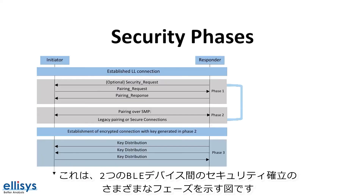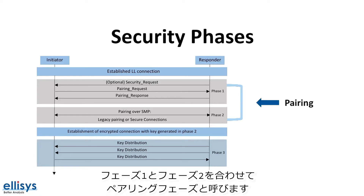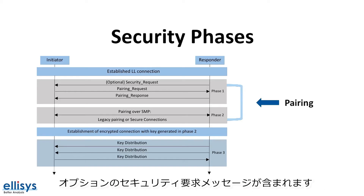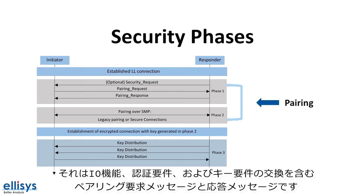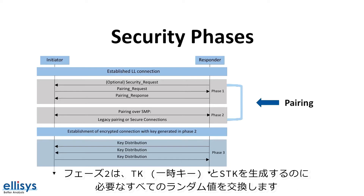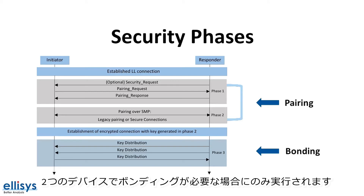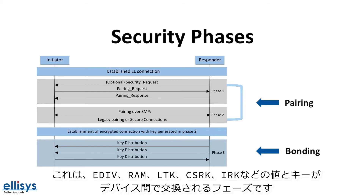Here's a diagram showing the different phases of security establishment between two BLE devices. Phases one and two together are called the pairing phase. Phase one involves the optional security request message from the slave, plus the pairing request and response messages exchanging IO capabilities, authentication requirements, and key requirements. Phase two handles the exchange of the temporary key and other random values used to generate the STK on each side. Phase three is optional, performed only when bonding is required, and is where values such as EDIV, RAND, LTK, CSRK, and IRK are exchanged between the devices.